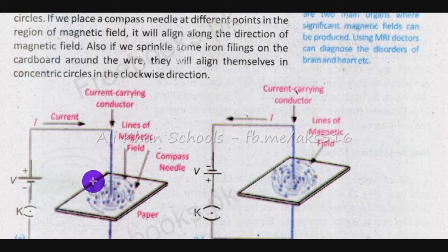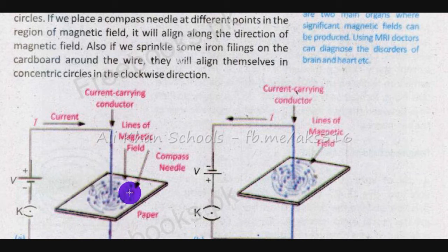Now these are concentric circles — concentric circles which have the same center. This means that the field lines will not cut from any point; they will move in one direction.